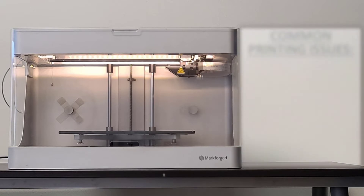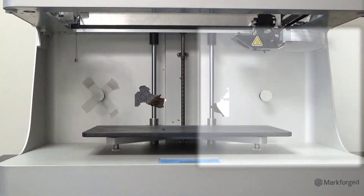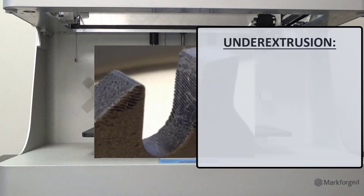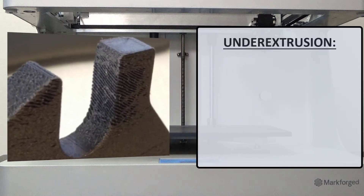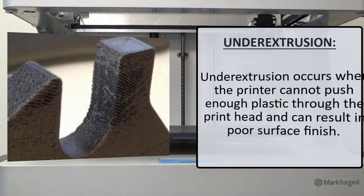Let's start with common plastic issues. One of the most common plastic issues is underextrusion. Underextrusion occurs when the printer cannot push enough plastic through the print head and can result in poor surface finish.